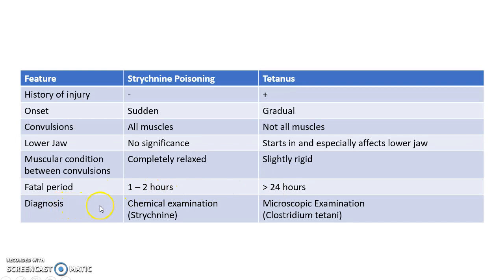Coming to the diagnosis, Strychnine poisoning can be diagnosed by chemical examination, that is by detecting Strychnine in the body, whereas in case of tetanus it is diagnosed by microscopic examination, that is by detecting the bacterium Clostridium tetani in the body.